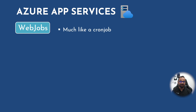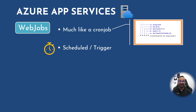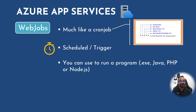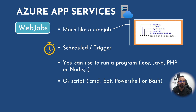The next one is Web Jobs, which is similar to a cron job in Linux — that means it can be scheduled or triggered manually. You can use Azure Web Jobs to run a program such as an .exe file, a Java program, a PHP or Node.js program. You can also use it to run scripts such as .cmd, .bat files, PowerShell, or even Bash scripts.